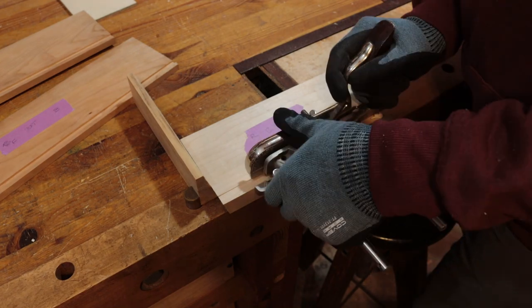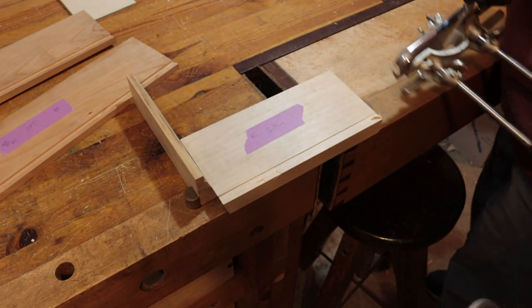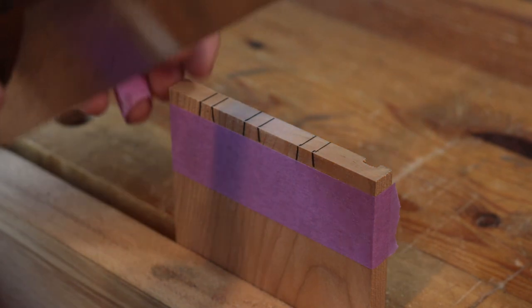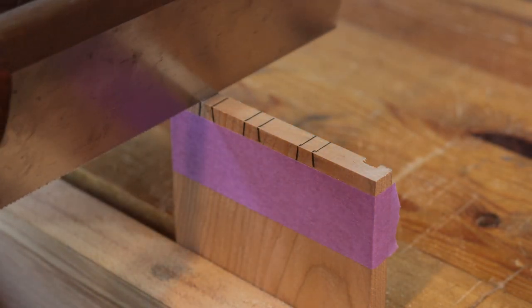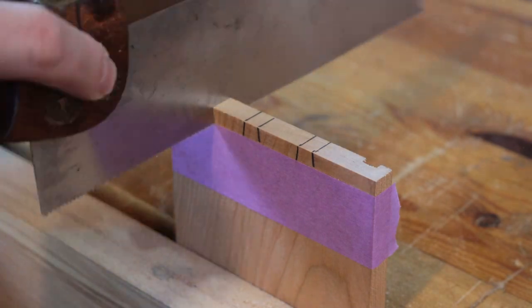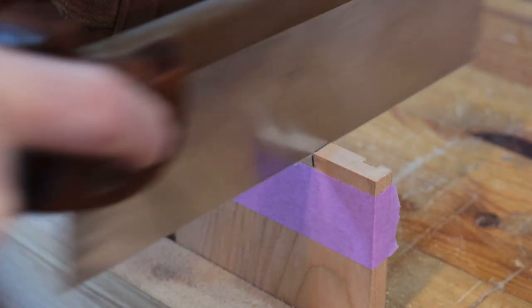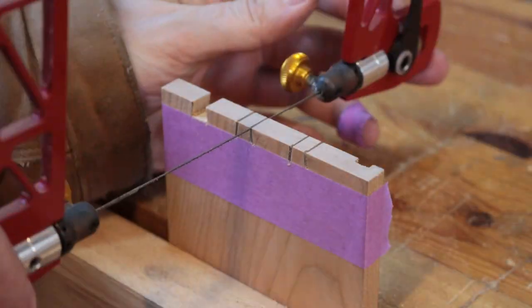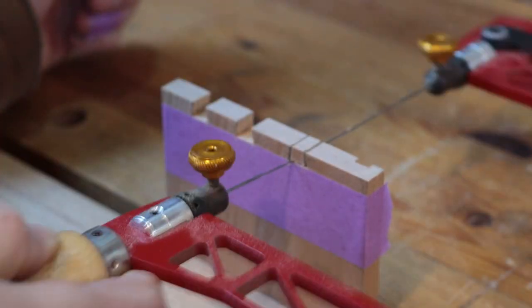Then I take the same combination plane and I plow another groove on the back of the front of the drawers. Then it's off to cutting the dovetails. Standard procedure here I just cut down the sides of the tails and then I use a coping saw to saw out the waste. I'll go back and clean this up with a chisel later off camera.